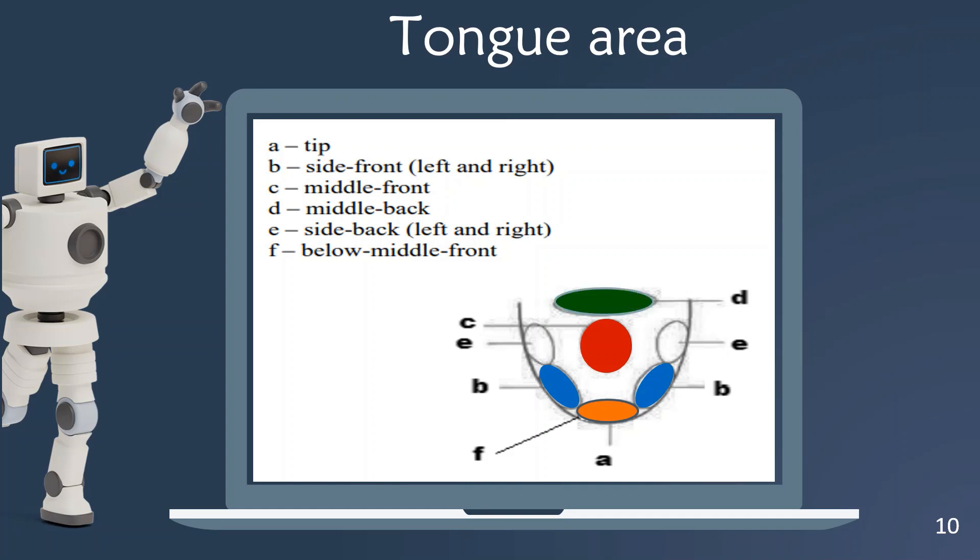Next, the middle back of your tongue, labeled D. Next, the side back left and right of your tongue, labeled E. And the last one, below middle front of your tongue, labeled F.